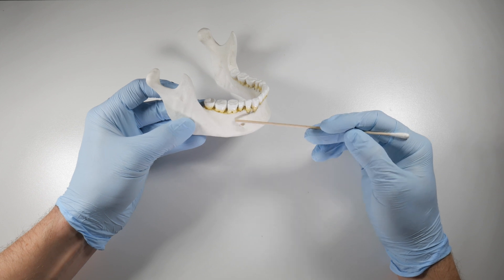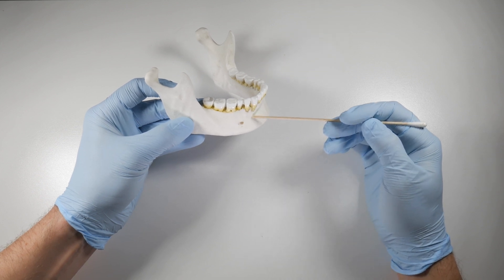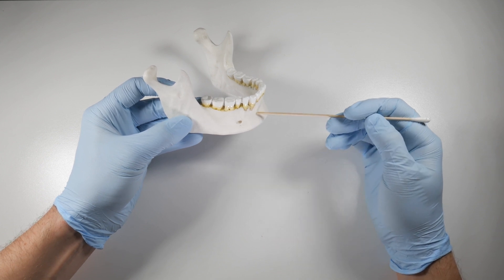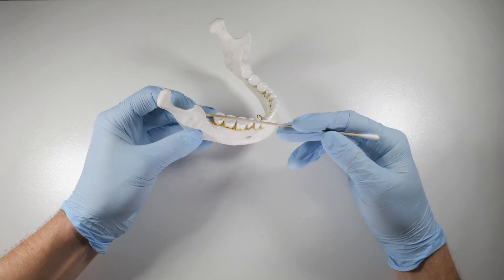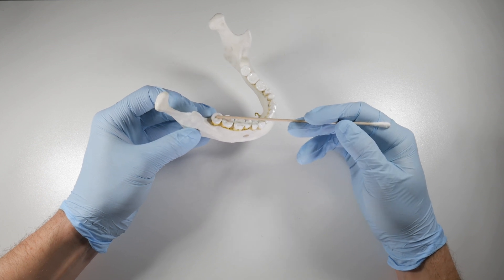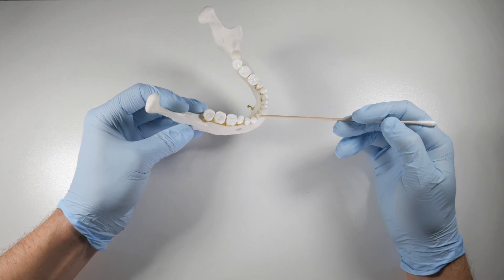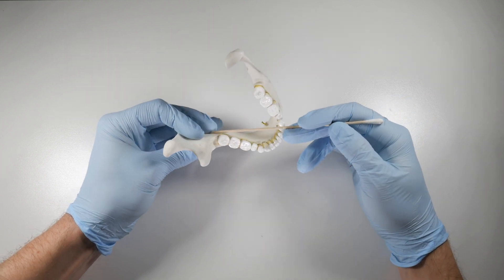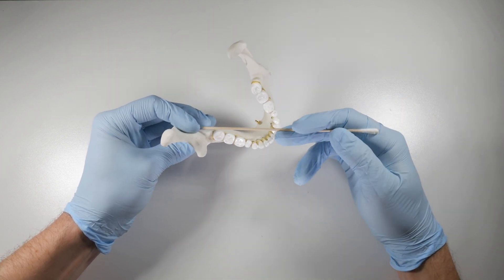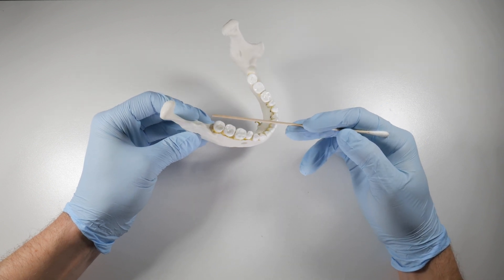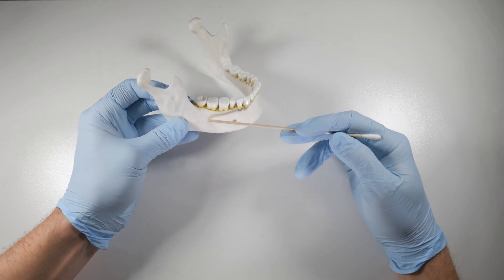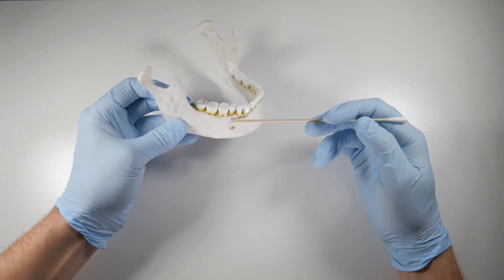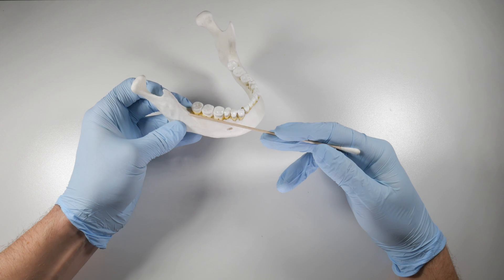Extending from the mental foramen is a terminal branch of the V3, which is the mental nerve. The mental nerve gives feeling to the lip and the chin and the buccal gingiva. When we do an inferior alveolar nerve block, we are again numbing all the teeth on this ipsilateral side from the third molar to the central incisor. We are also getting some lingual anesthesia, but that's from the lingual nerve during our block, not the inferior alveolar nerve. And we also get no anesthesia on the buccal aspect of these posterior teeth, so that's why we have to do our separate buccal nerve block.